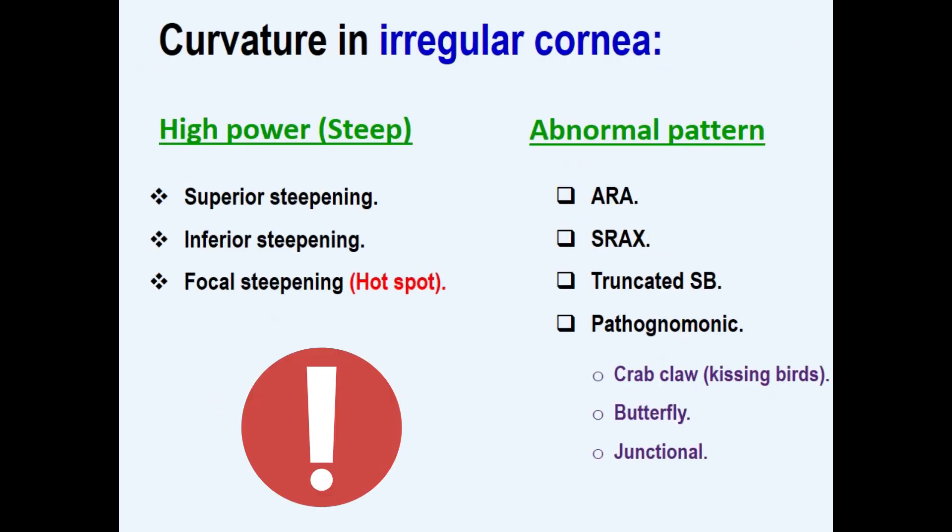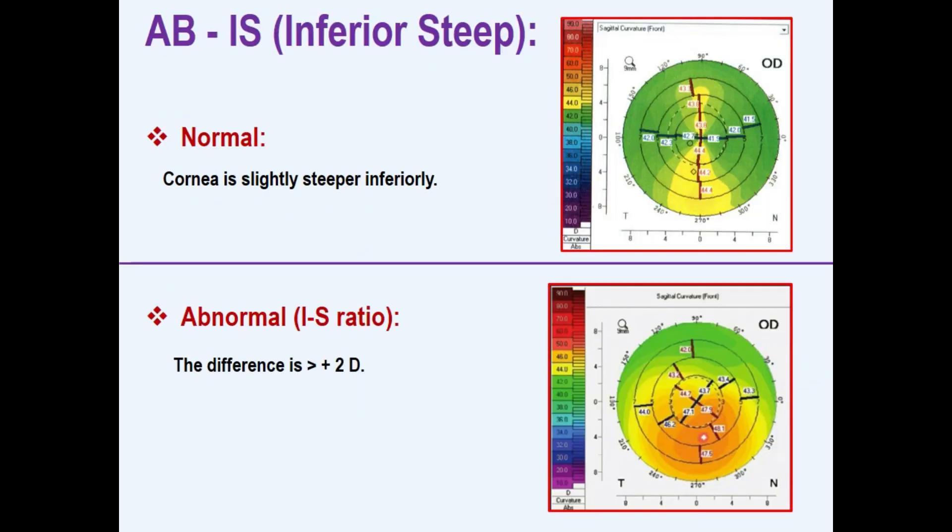What are the topographic signs of irregularity? Irregularity can present as abnormal power or abnormal pattern. The asymmetric bowtie inferior steep. Normally, the cornea is slightly steeper inferiorly. The infero-superior difference should not exceed plus 2 diopters at the middle circle. Abnormal inferior steepening is the common pattern in keratoconus.